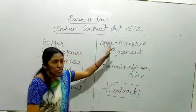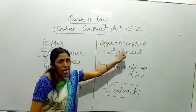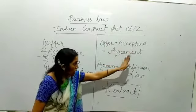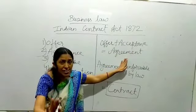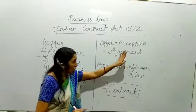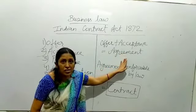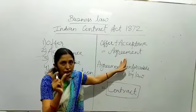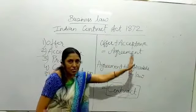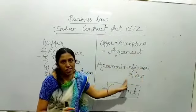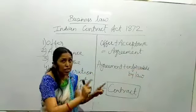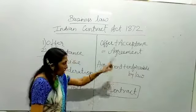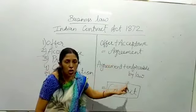Toh phir se: offer plus acceptance equals to an agreement. Okay. Ab yahan par aapke kanooni aqzaat sab taiyaar ho chuke. Ab kanooni aqzaat taiyaar hone ke baad, jab law us par apna khaapaa lagata hai — us term ko kaha jata hai: an agreement plus enforceable by law. Matlab ki, rajniyam ke dwara jab pravartan hota hai — yahan par contract ban jata hai.